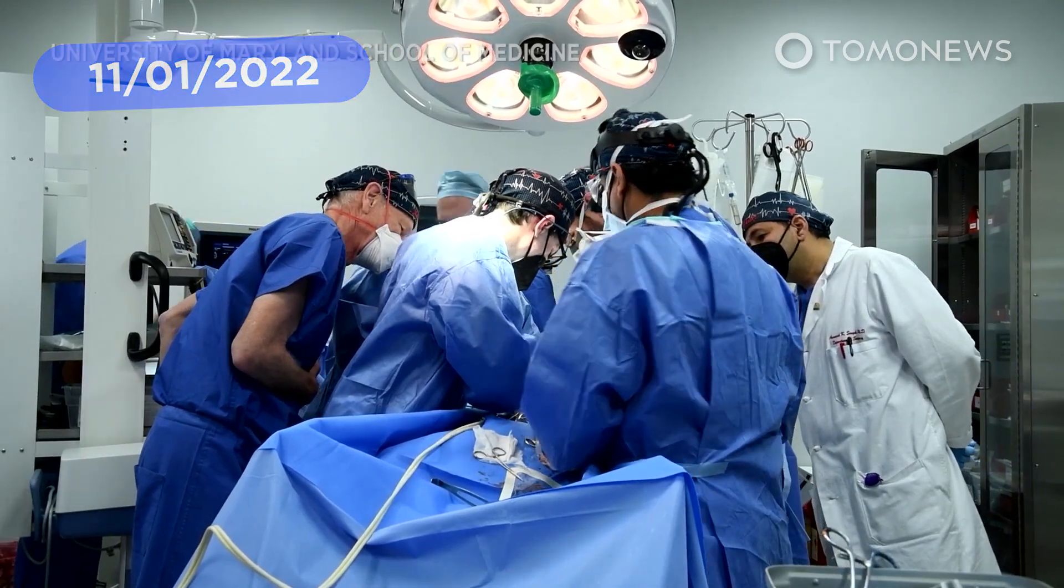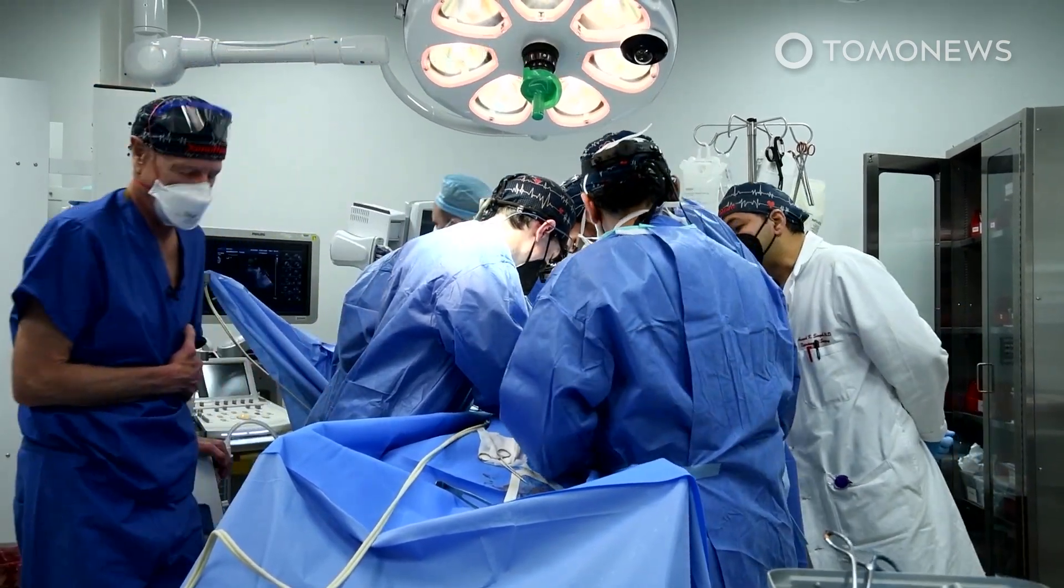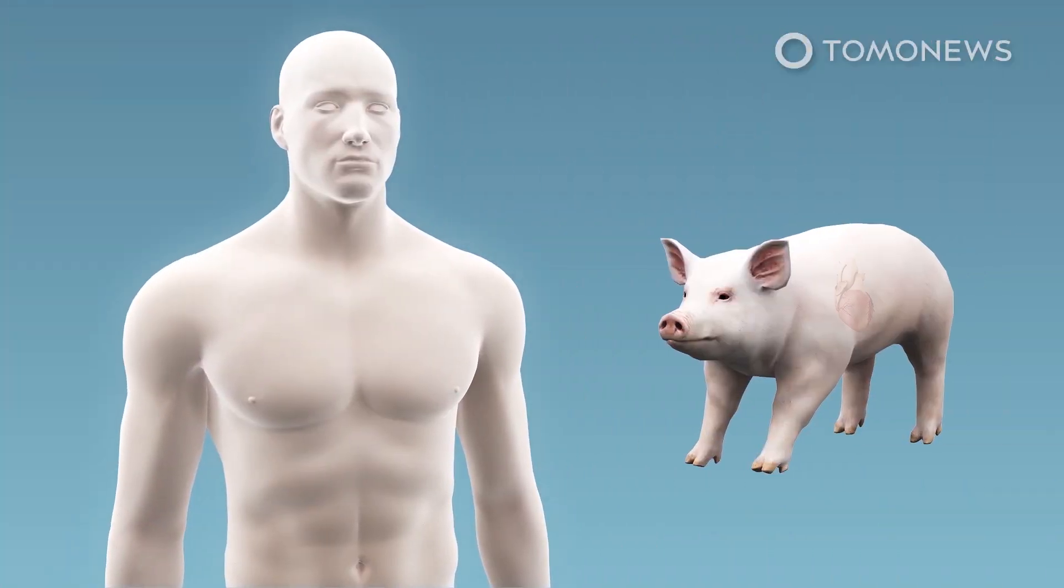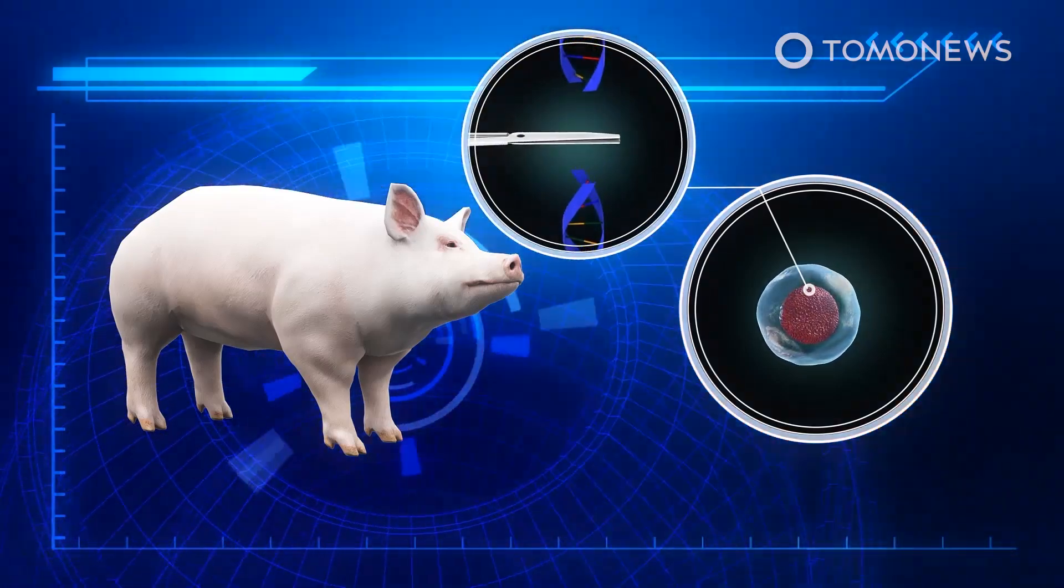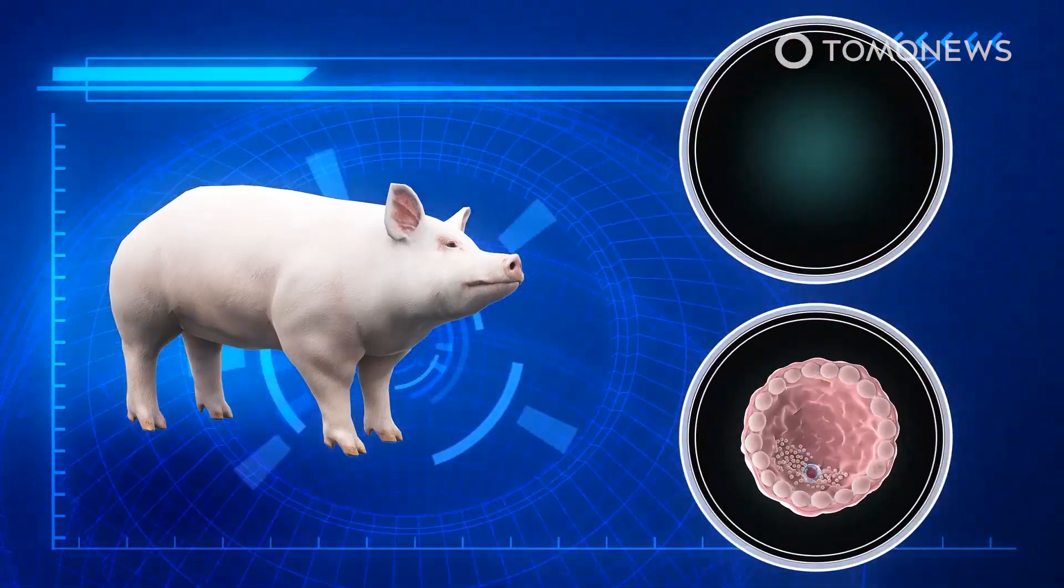Animal-to-human organ transplants have taken a new step forward. A man from the U.S. has become the first person to get a heart transplant from a pig, according to the University of Maryland School of Medicine. The pig used for the transplant was genetically modified to remove a gene that produces a sugar, which in turn triggers an immune response in humans.